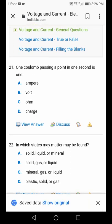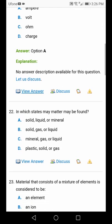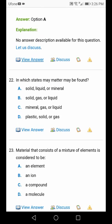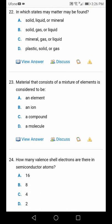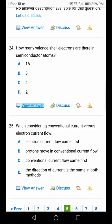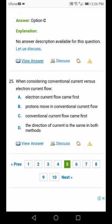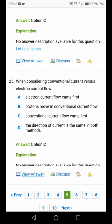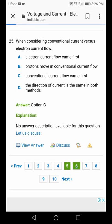One coulomb passing a point in one second is one ampere. Matter states are solid, liquid, gas. Material that consists of a mixture of elements is compound. How many valence shells does silicon have? Four. Conventional current flows from positive to negative.